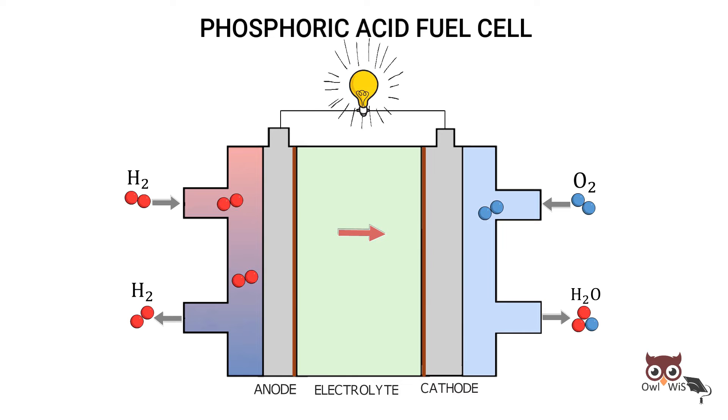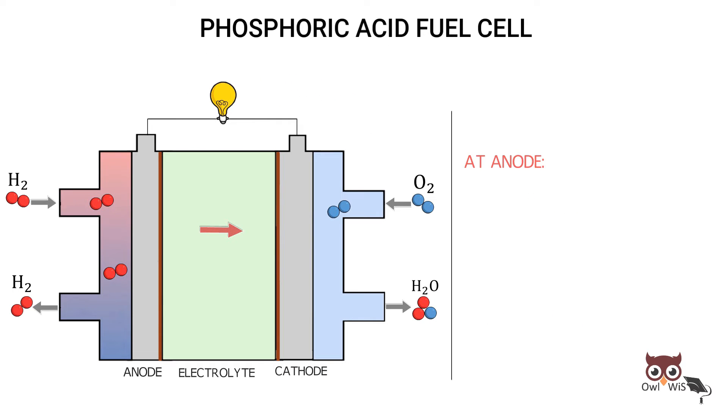The reactions are: at fuel electrode hydrogen produces hydrogen ions plus electrons. At air electrode, oxygen combines with hydrogen ions in presence of electrons to form water. The net fuel reaction is hydrogen reacts with oxygen to form water.